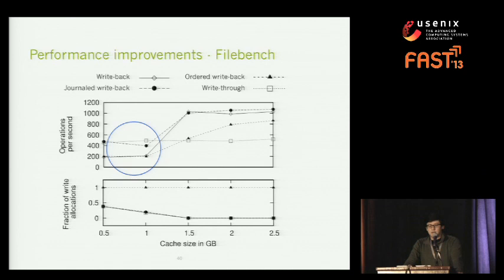For ordered write-back, it performs worse across the whole cache range due to the lack of write coalescing, incurring an overhead of almost 200 operations per second — which is why it performs worse than write-through at that point.